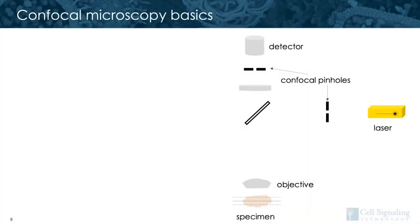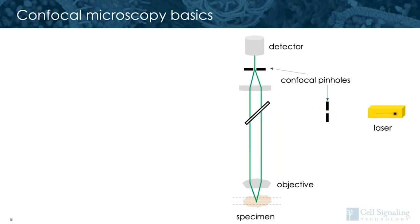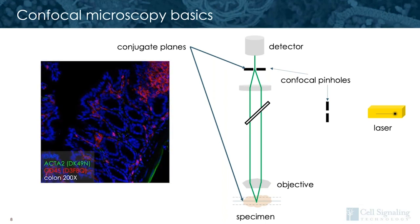Now that we've discussed the mechanics of an epifluorescent microscope, it's time to consider the confocal microscope. A laser scanning confocal microscope relies on lasers to excite the sample. This light is passed through a pinhole so that discrete points of light are directed across the sample with scanning mirrors. Excited light from the sample is then directed toward another pinhole, and this allows you to image in conjugate planes. This is important for eliminating out-of-focus light from reaching the detector, and this is why confocal microscopes are able to take thin optical sections, where the thickness is determined by the size of the pinhole.